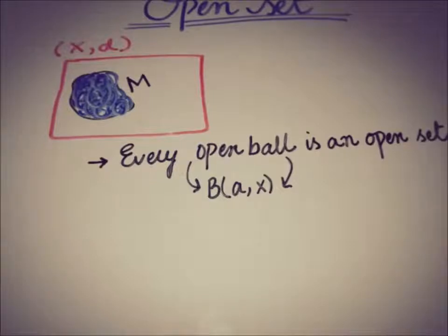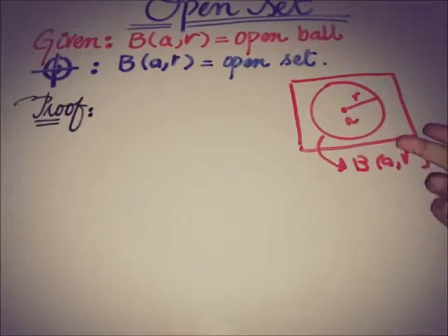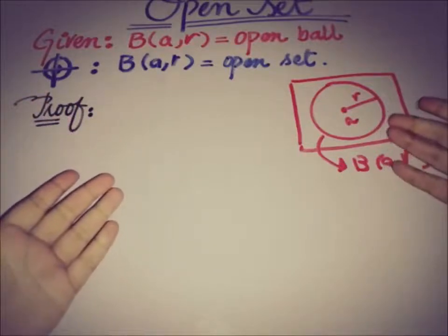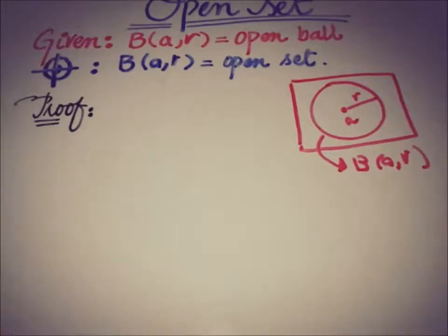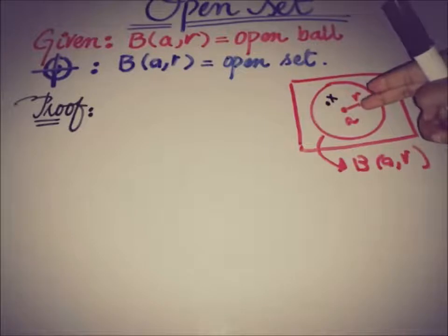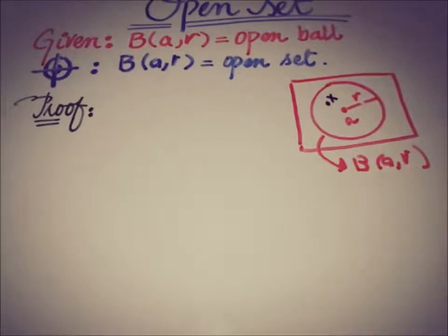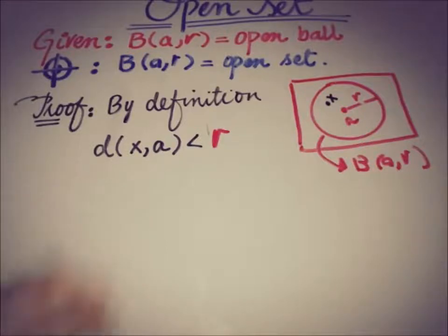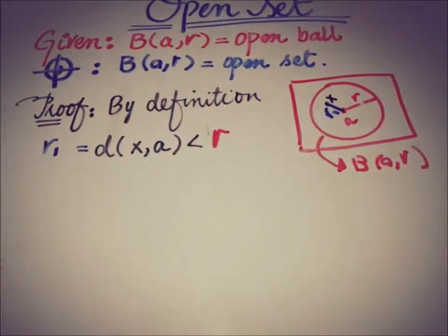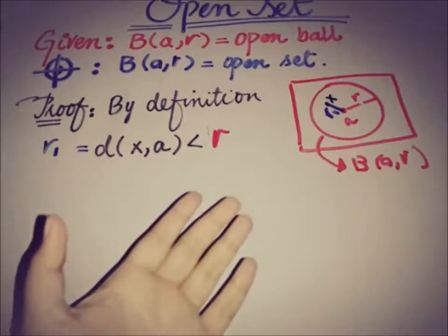Heading toward the proof: we have an open ball in a metric space centered at a with radius r, and we have to show that this open ball is an open set. We use the definition of an open ball — if we take any point x from this open ball, then by definition the distance d(x, a) must be smaller than r. Let's call this distance r1, so d(x, a) = r1 and r1 < r.